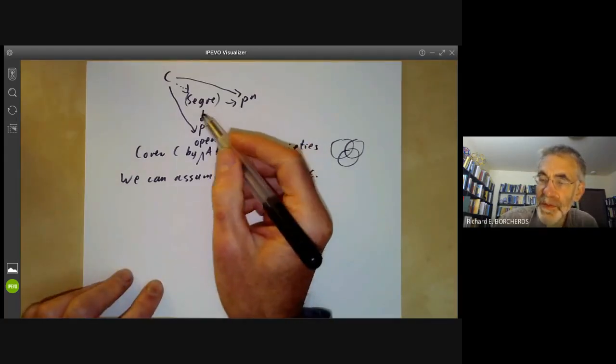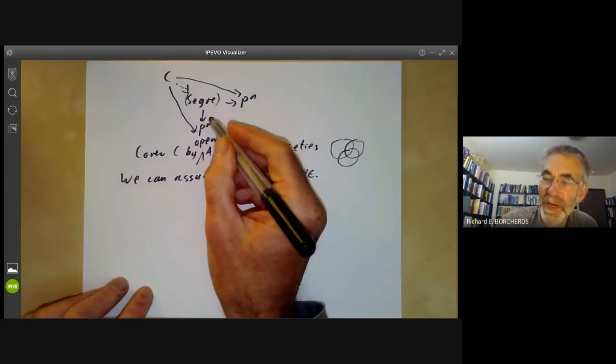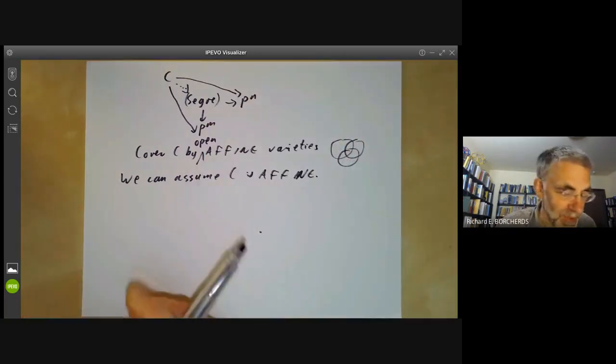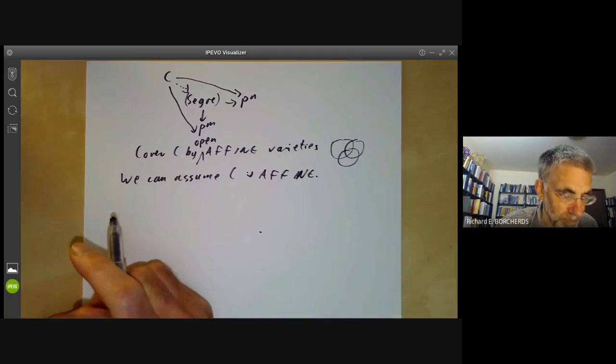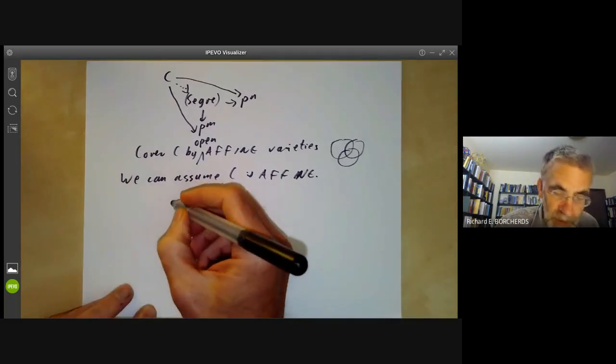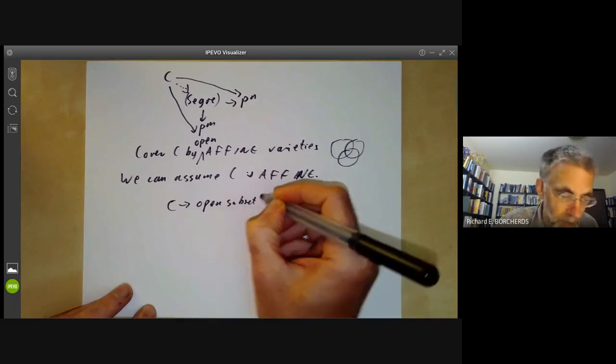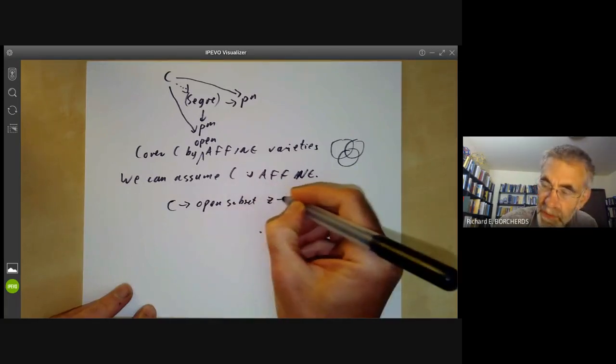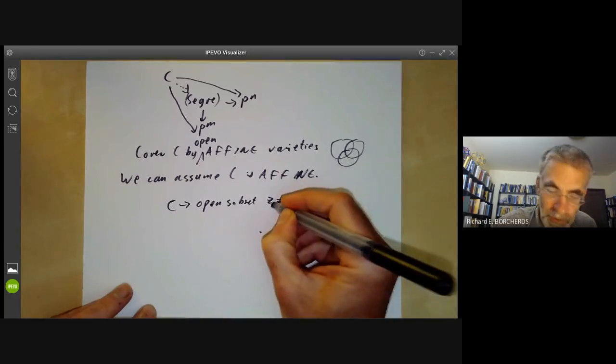And, of course, defining maps from affine varieties to P to the M is a little bit complicated. So we should also cover P to the M and P to the N by all these open affine varieties. So, for example, a morphism from C to the open subset Z naught not equal zero of P to the M.